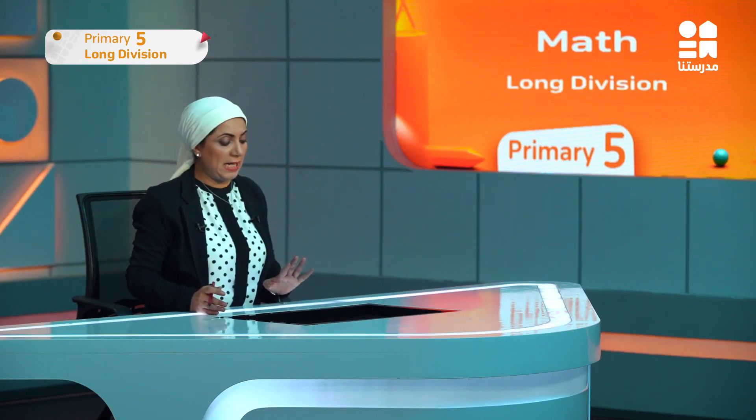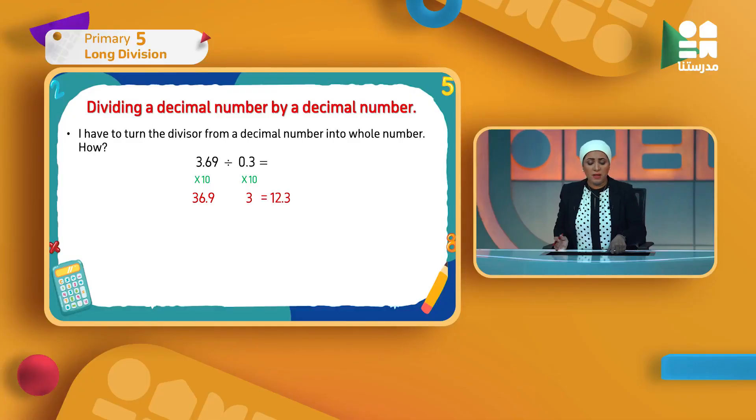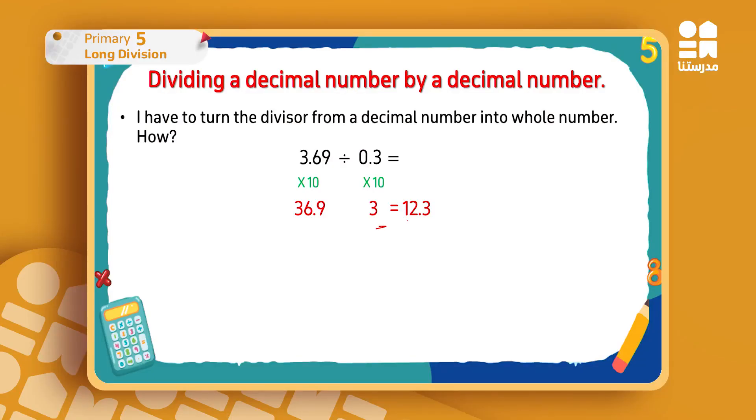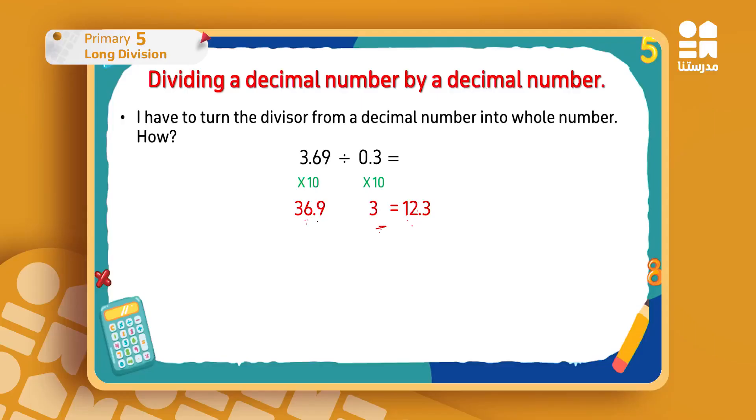Now it's a normal question that I can answer. I can either answer it with the house method or the line method, as I want. The subject is easy, doesn't even need the house method. It's divided by one digit. The answer will be 12.3. How? Again, I'll consider that the decimal point in the number 369 doesn't exist and I'll work. 3 divided by 3 is 1. 3 divided by 6 is 2. There's a decimal point here, so I'll put it in the place where I found it. Then 3 divided by 9 is 3. So the answer is 12.3.